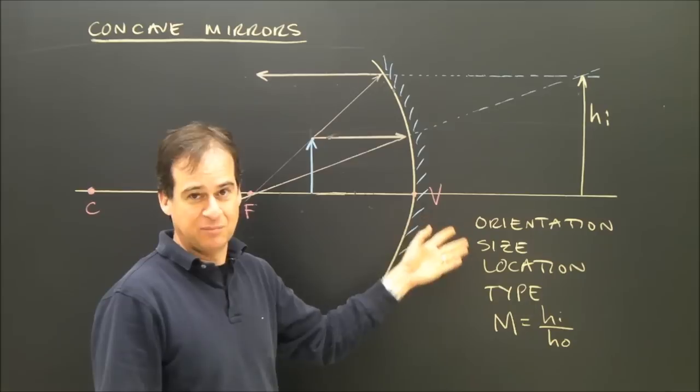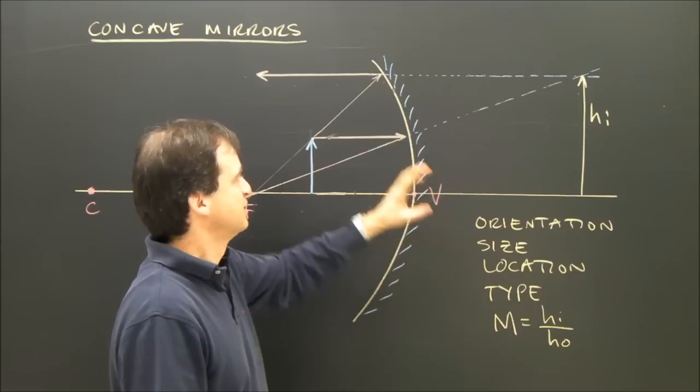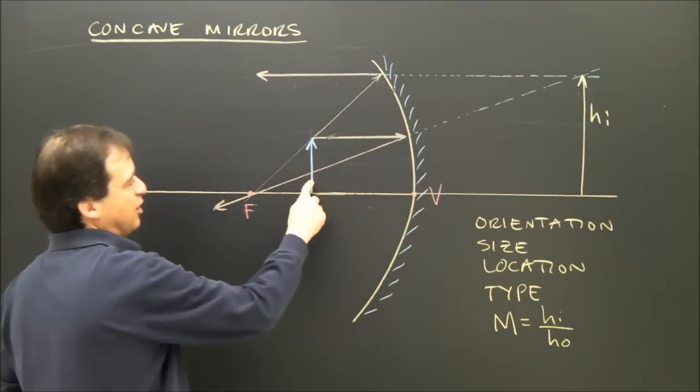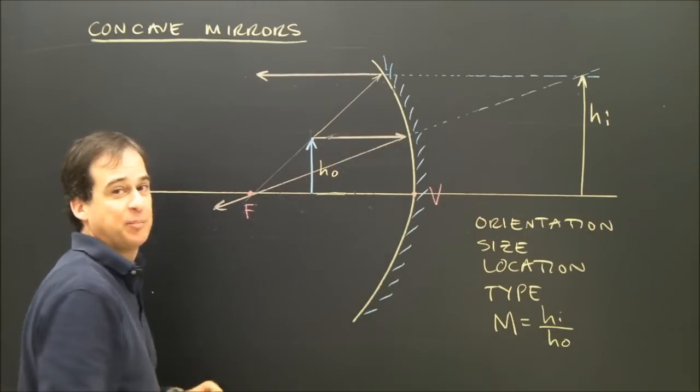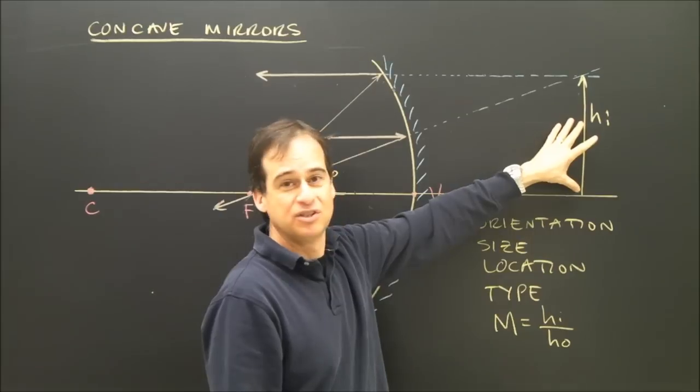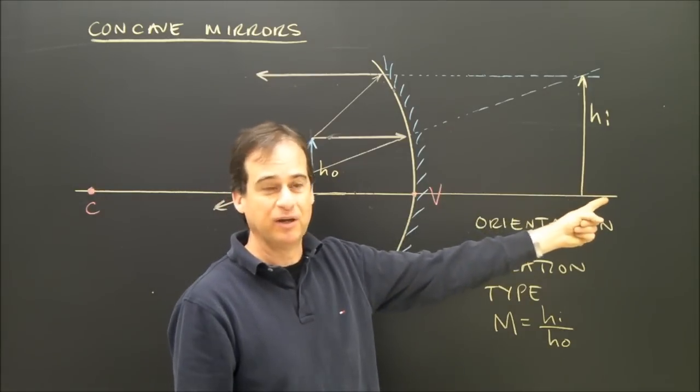I need to describe these properties depending on where you teach it. Orientation is upright or inverted. This arrow, my object, this is the height of the object. That object is upright. The image is upright. So it's the same orientation. My orientation is upright. Size, it's definitely bigger.